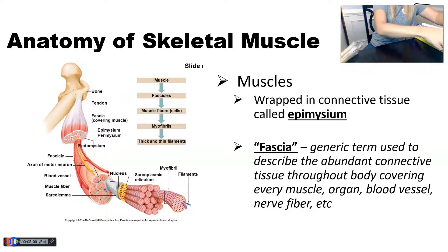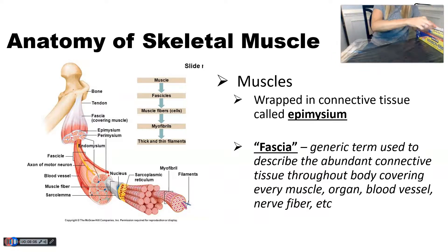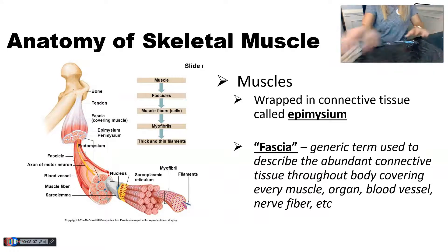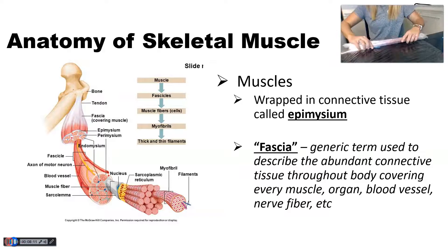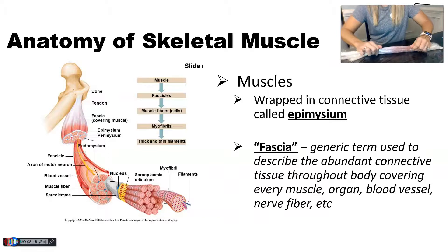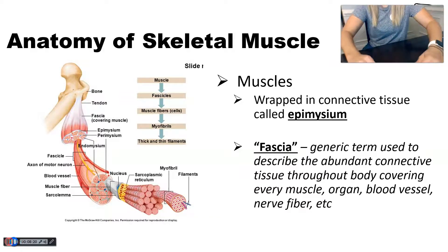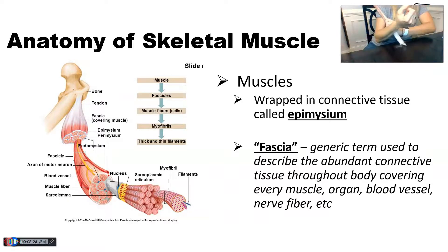I'm now going to wrap this entire muscle in connective tissue — epimysium. I'm going to take my last layer and, if you remember, the word part 'epi' means 'on top of,' so this is my final connective tissue layer. It gets wrapped around the whole thing, making an entire skeletal muscle — this would be like my biceps brachii.